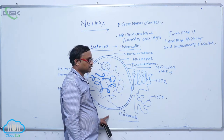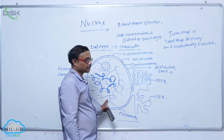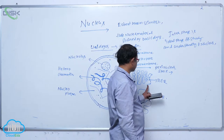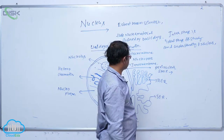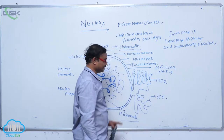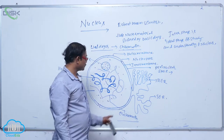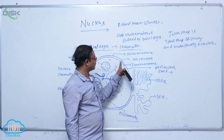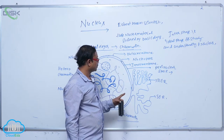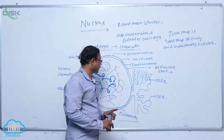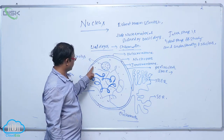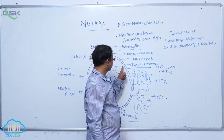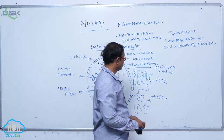At interphase, the nucleus is not dividing. The two membranes of the nucleus are interrupted at some places — they are not connected, but are interrupted by minute pores. These minute pores are formed by the fusion of the two membranes and are called nuclear pores.